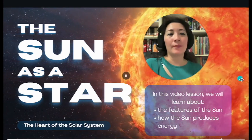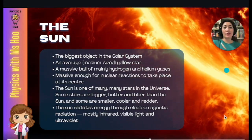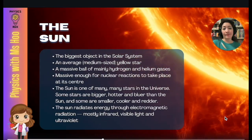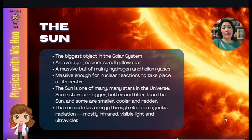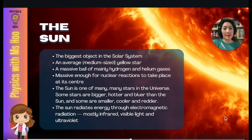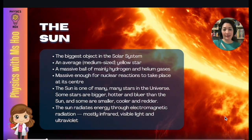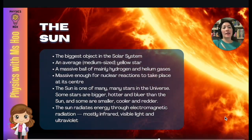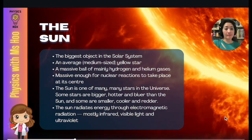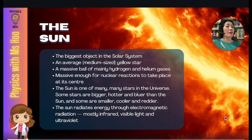So what do you need to know? First of all, you need to know that the sun is the biggest object in the solar system. Our sun is considered to be a medium-sized star and it's yellow in color. It is a massive ball of mainly hydrogen and helium gases. It's so massive that there's enough mass for the nuclear reactions to take place at its center. And the sun is one of many, many stars in the universe, so it's not the only star.